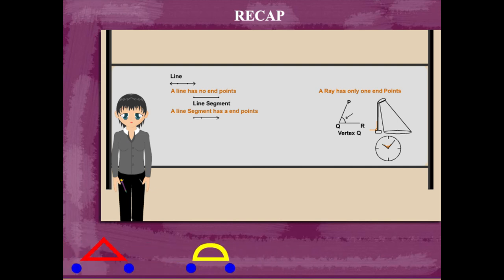The point where the rays meet is called the vertex. Nancy ma'am shows this on the board too.